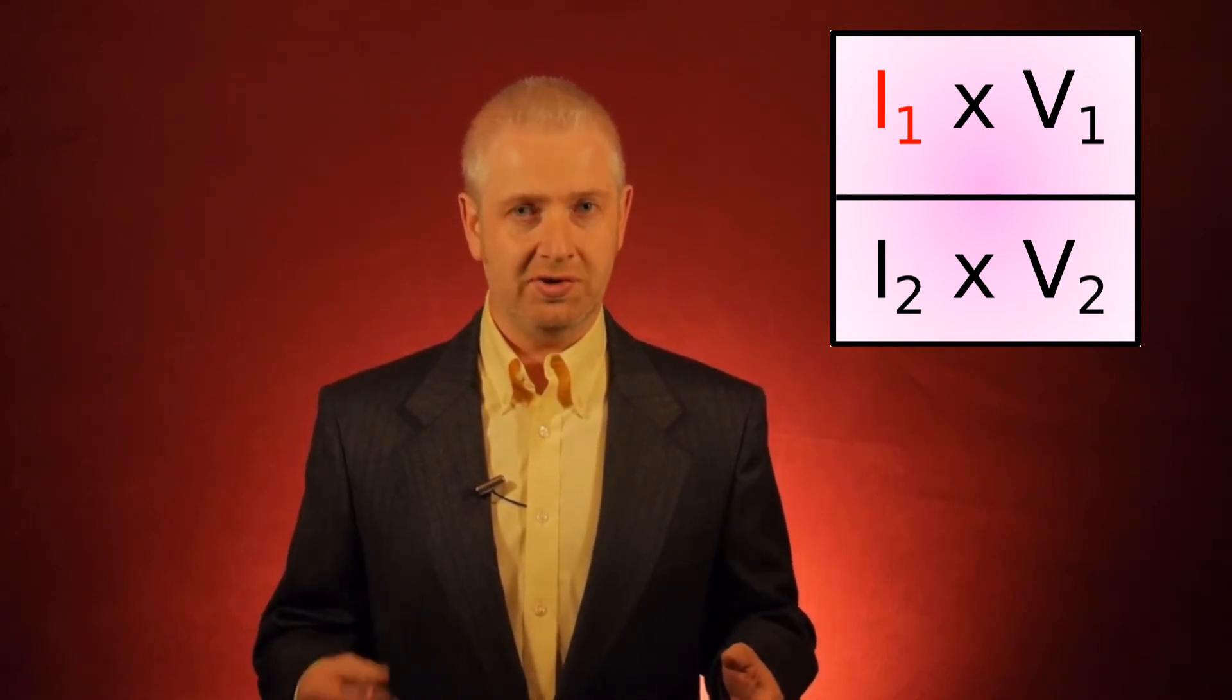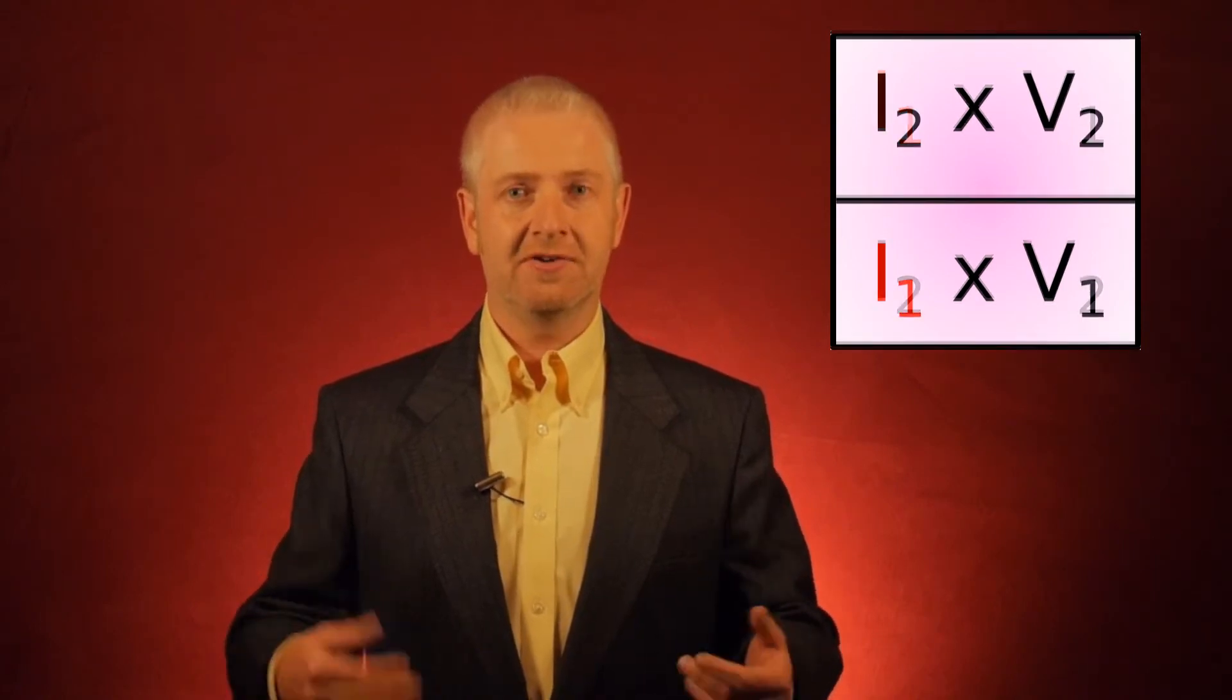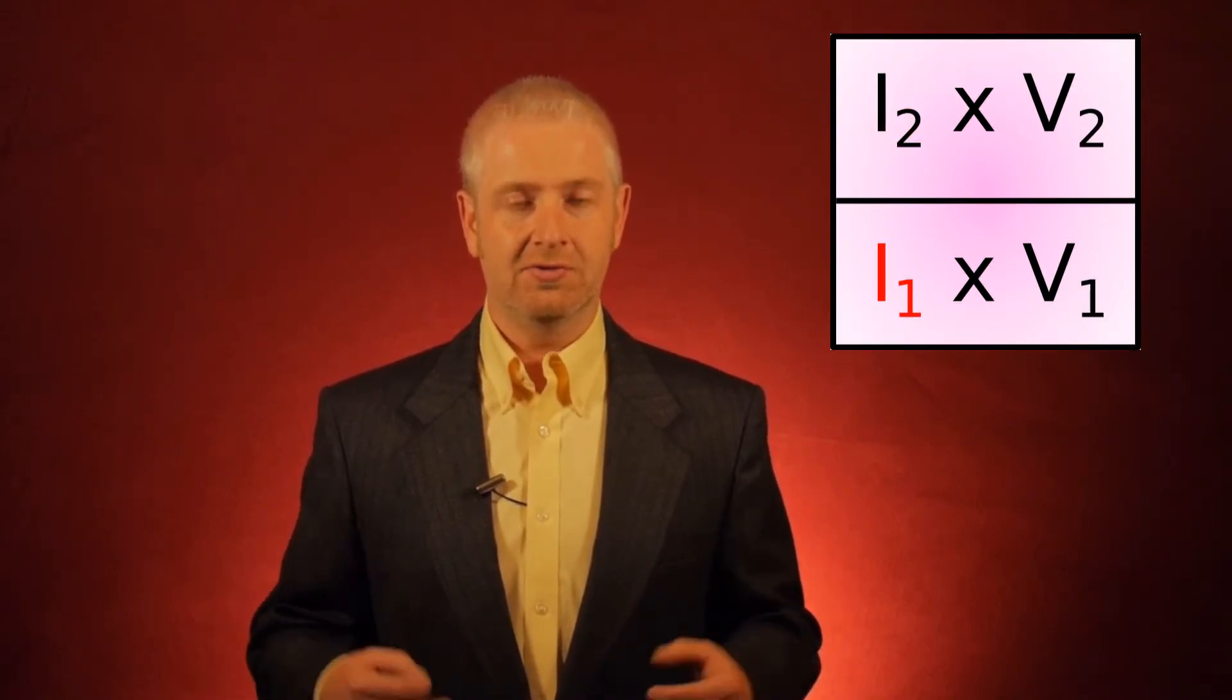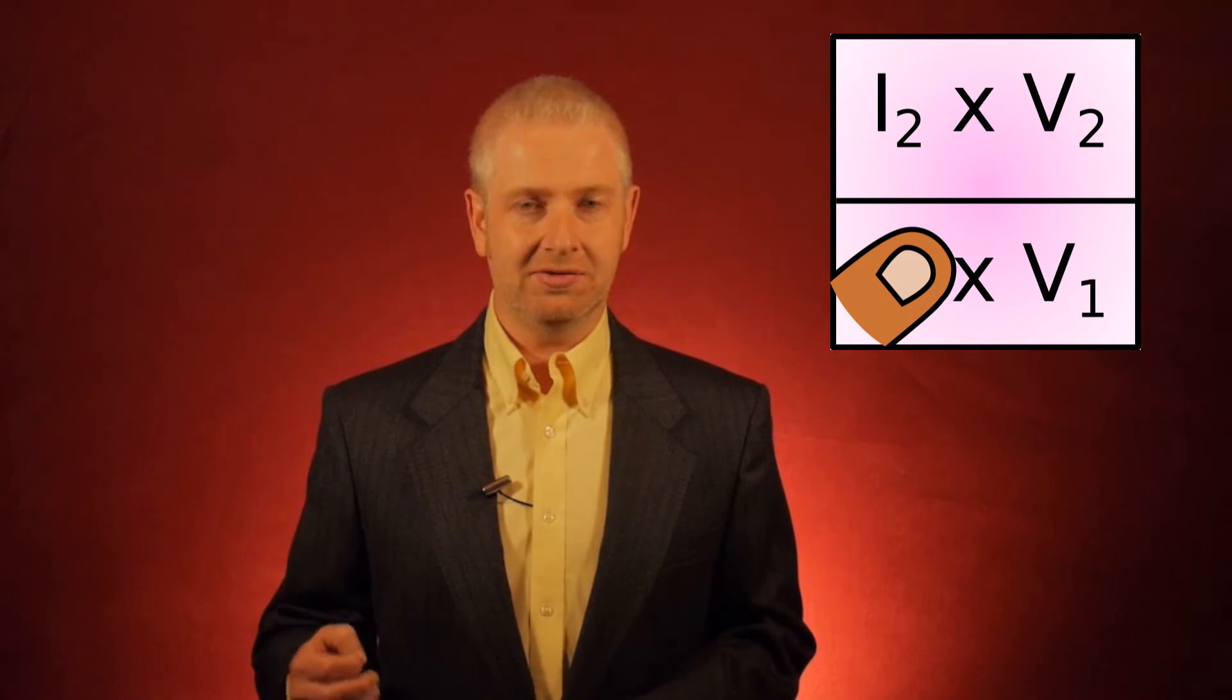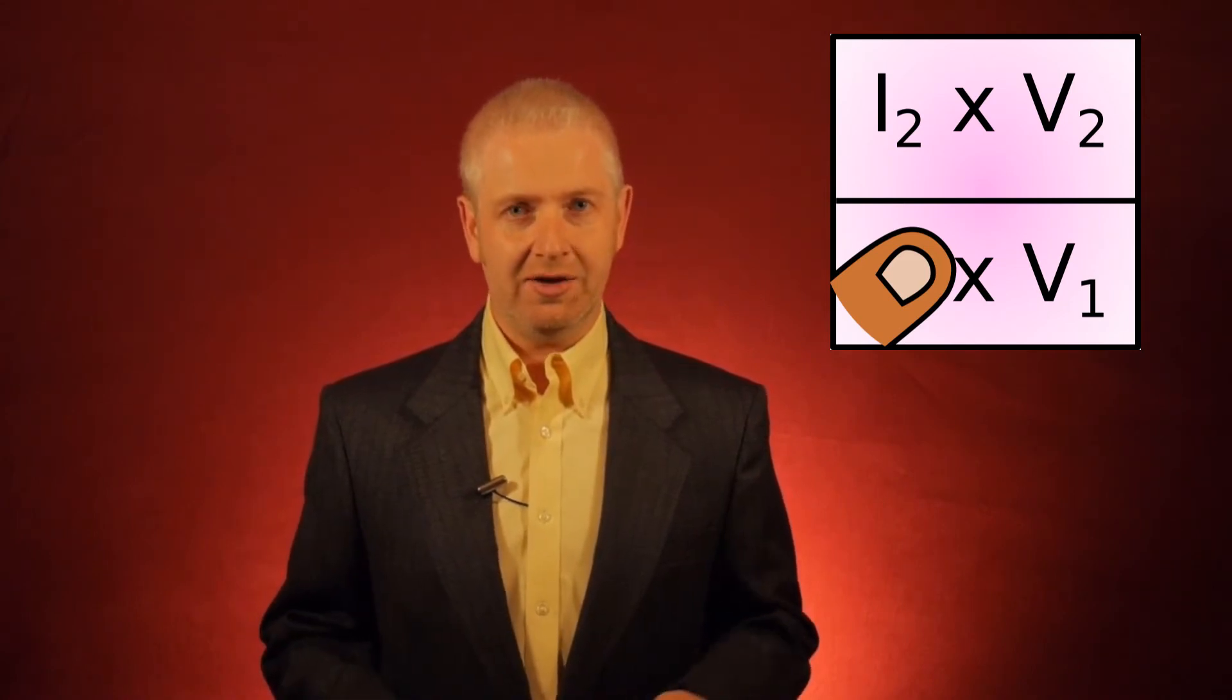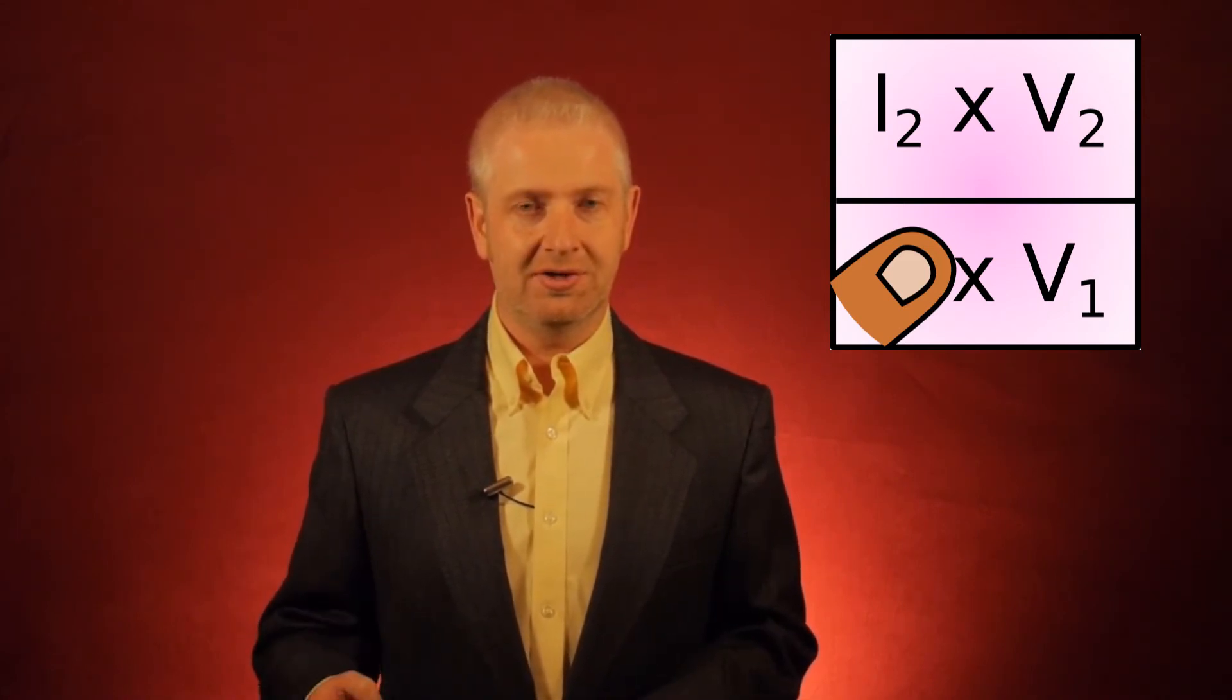Alright. Is it on the top of the square? Rule two: yes. Flip it upside down. So flip the whole square upside down. And then, same as the triangle, cover over I1 and it will immediately tell you the equation you need to use. I1 equals I2 times V2 divided by V1.